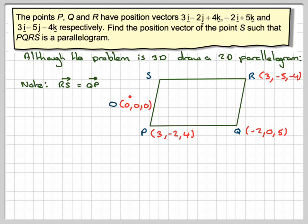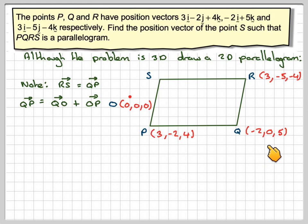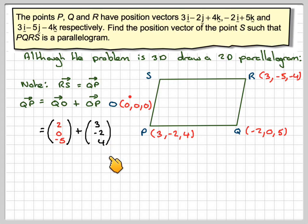I can find the vector QP by doing QO plus OP. It's important that I go from Q to P, because I'll be going from R to S. So QP equals QO plus OP. Going QO means going against the coordinates of Q, so I change all the signs: (2, 0, −5). Then adding OP gives (3, −2, 4). I find it much easier to use column vectors, so QP equals (2+3, 0−2, −5+4) which gives (5, −2, −1).